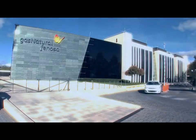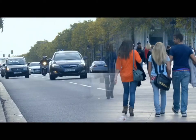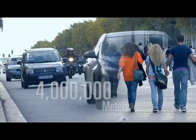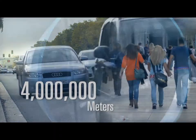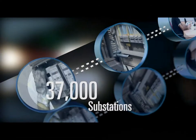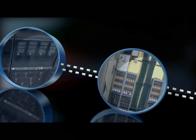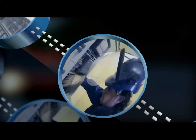Gas Natural Fenosa plays a leading role in this evolution of the electrical system. The company is installing 4 million meters nationwide and modernizing 37,000 substations, where the equipment to collect customer data and send it to the processing centers are located, which will become the driving force of the new smart grids.